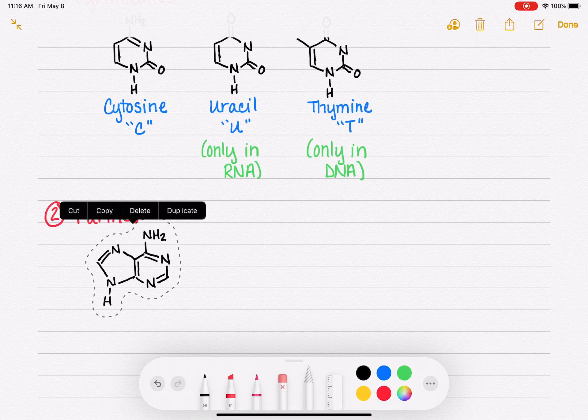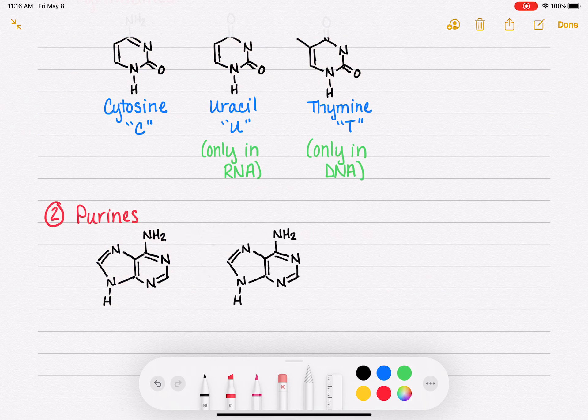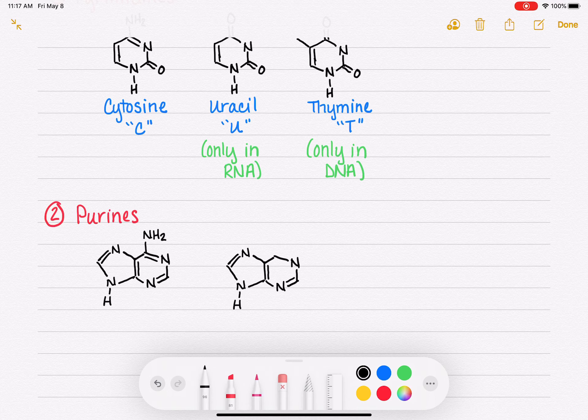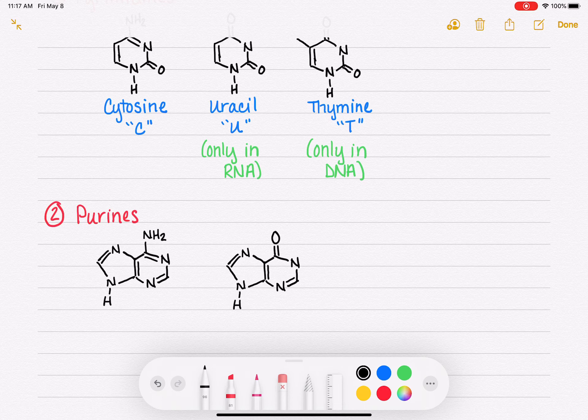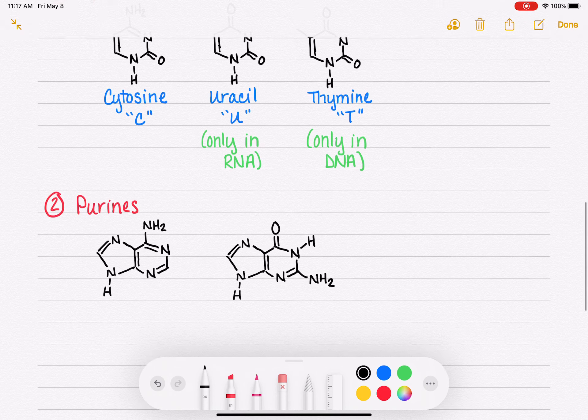And then the second purine structure, which is pretty similar. This one, we are going to remove one of the double bonds from the six-membered ring. We're going to add a carbon-oxygen double bond up top. Oops, that's supposed to be a hydrogen that I just drew. We also have an NH2 sticking off of the six-membered ring. And those are all the changes for that guy.